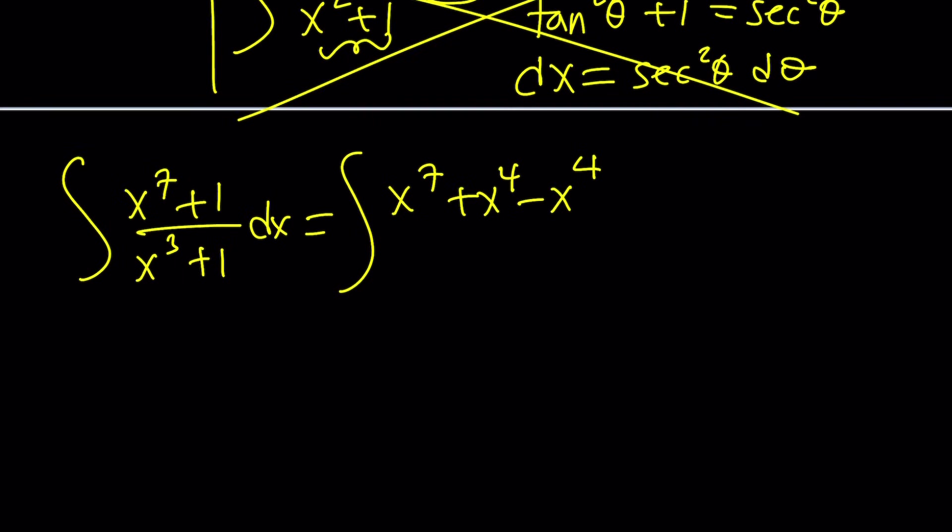I'm going to go ahead and write the x to the seventh plus one as follows. x to the seventh plus x to the fourth minus x to the fourth. Now, notice that I can add and subtract the same thing, which is essentially zero. And then I can subtract and add the same thing. Again, that's zero. Notice that I haven't really added anything. I just added zero. You can add it a million times. And then plus one at the end. Awesome.